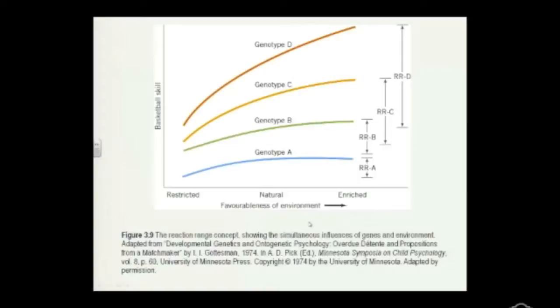Using basketball as an example — though it could be any trait — the horizontal axis represents how favorable or stimulating the environment is for that particular skill. At the restricted end there is no environmental stimulation at all; at the enriched end you might have a basketball court in your backyard or belong to a club. It also depends on your genotype, in this case height. Genotype A has a range, but it is restricted by genes to a particular range of behavior or skill.